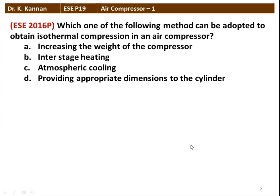The next question from the 2016 question paper: Which one of the following methods can be adopted to obtain isothermal compression in an air compressor? Options include increasing the weight of the compressor, inter-stage heating, atmospheric cooling, or providing appropriate dimensions to the cylinder. The correct method to obtain isothermal compression is providing appropriate dimensions to the engine cylinder. The other three options have no relevance to isothermal compression.